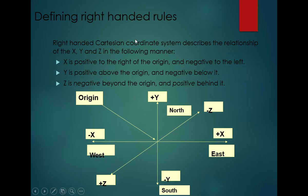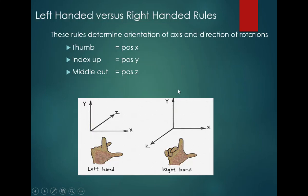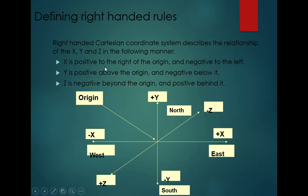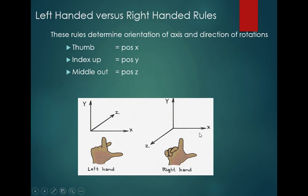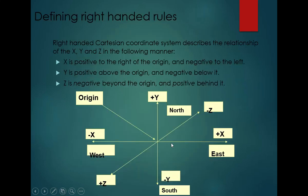Defining the right-handed rule: the right-handed coordinate system describes the relationship of the x-axis, y-axis, and z-axis. In the right-handed rule, x is positive to the right of the origin and negative to the left. Y is positive above the origin and negative below. Z is positive behind the origin and negative beyond the origin.